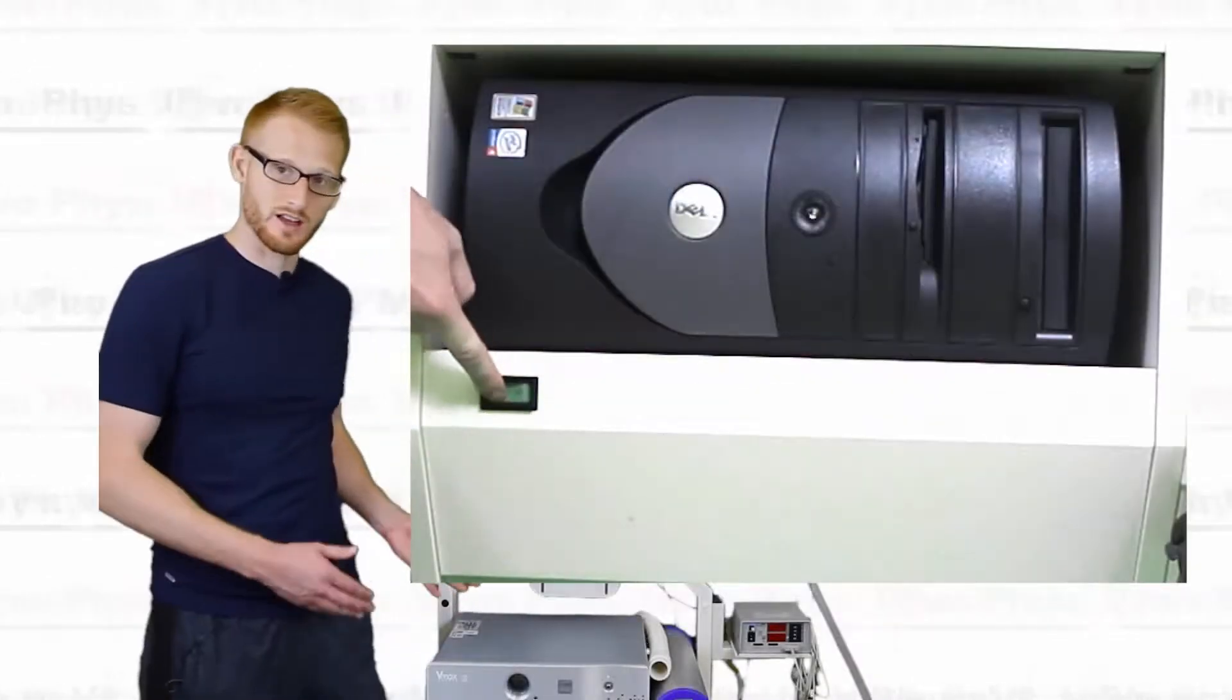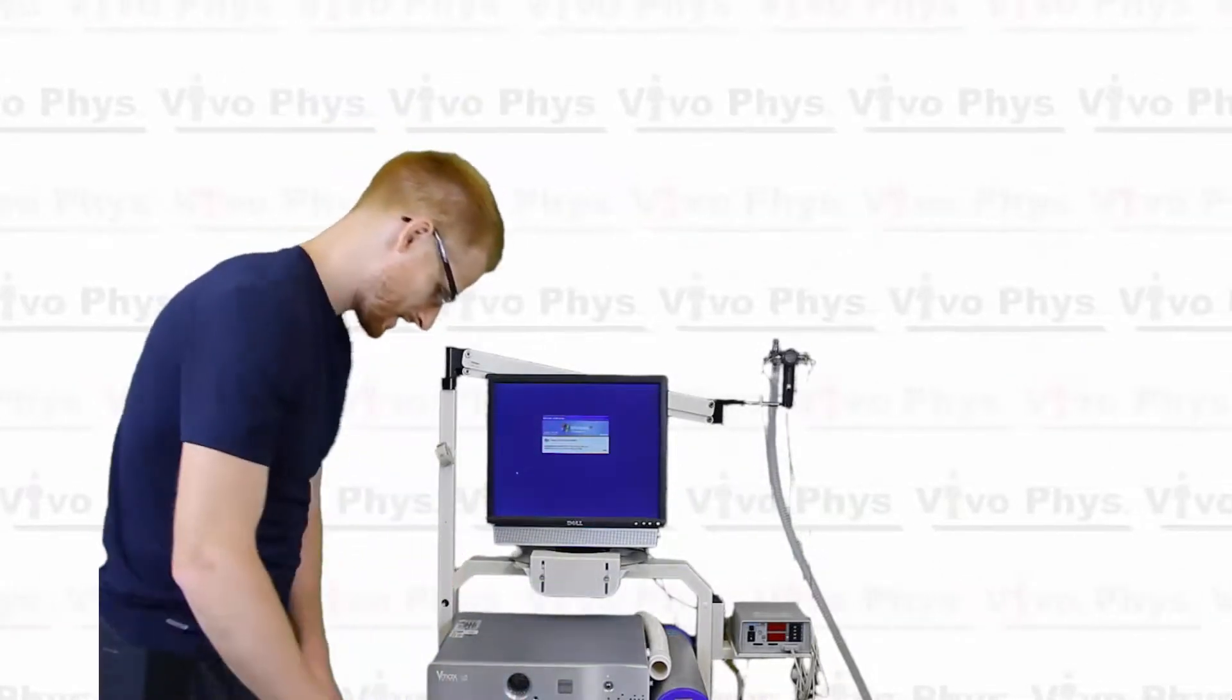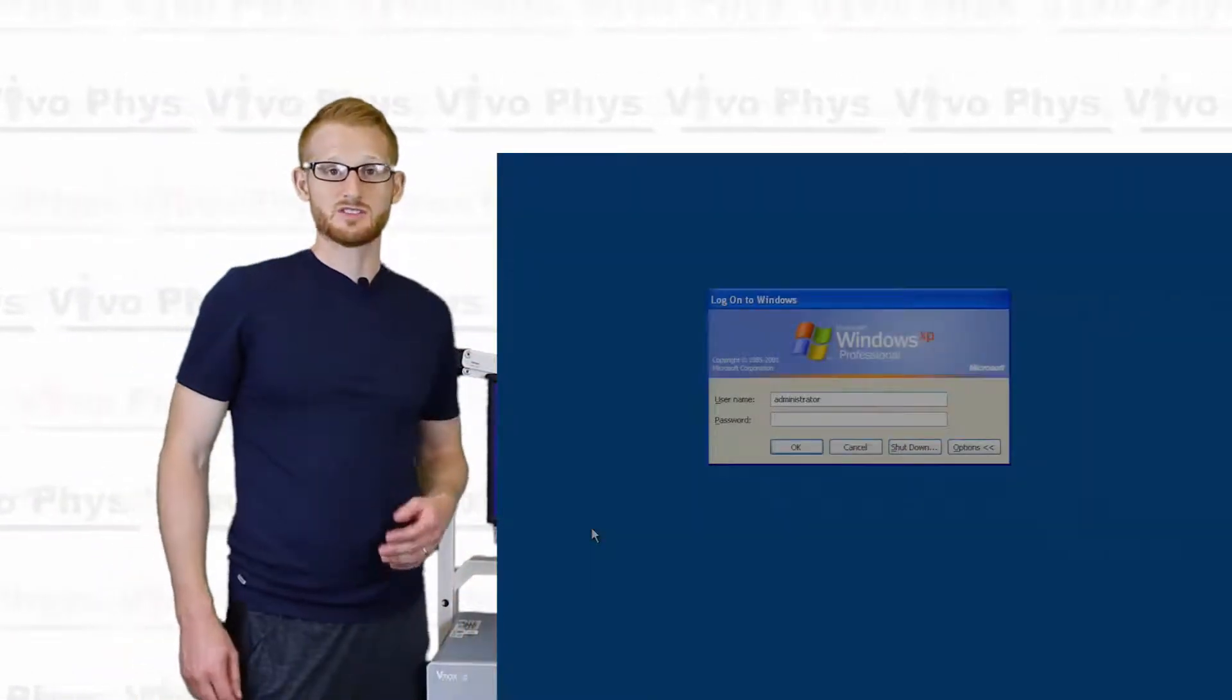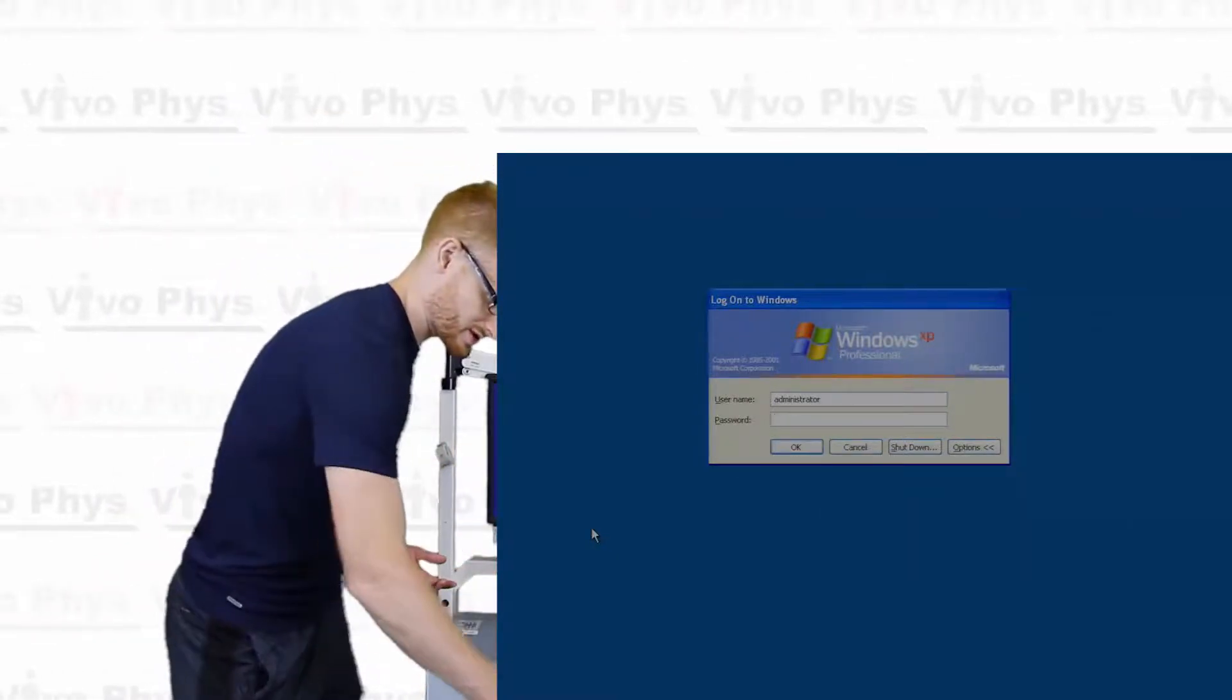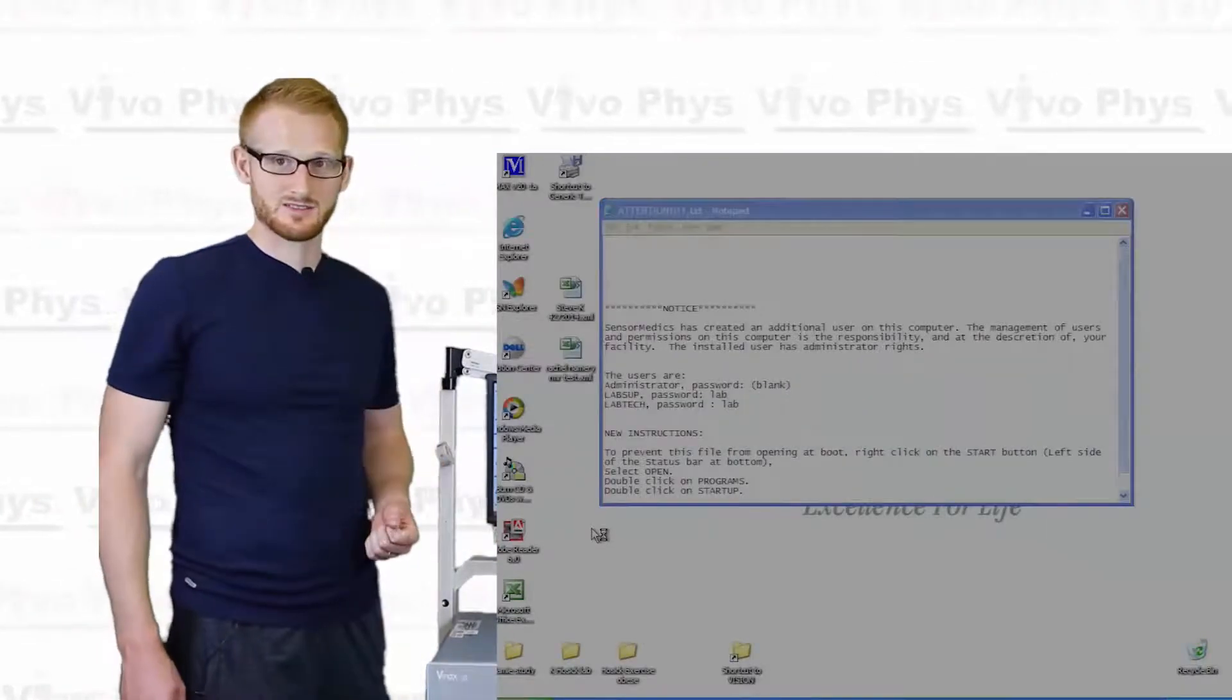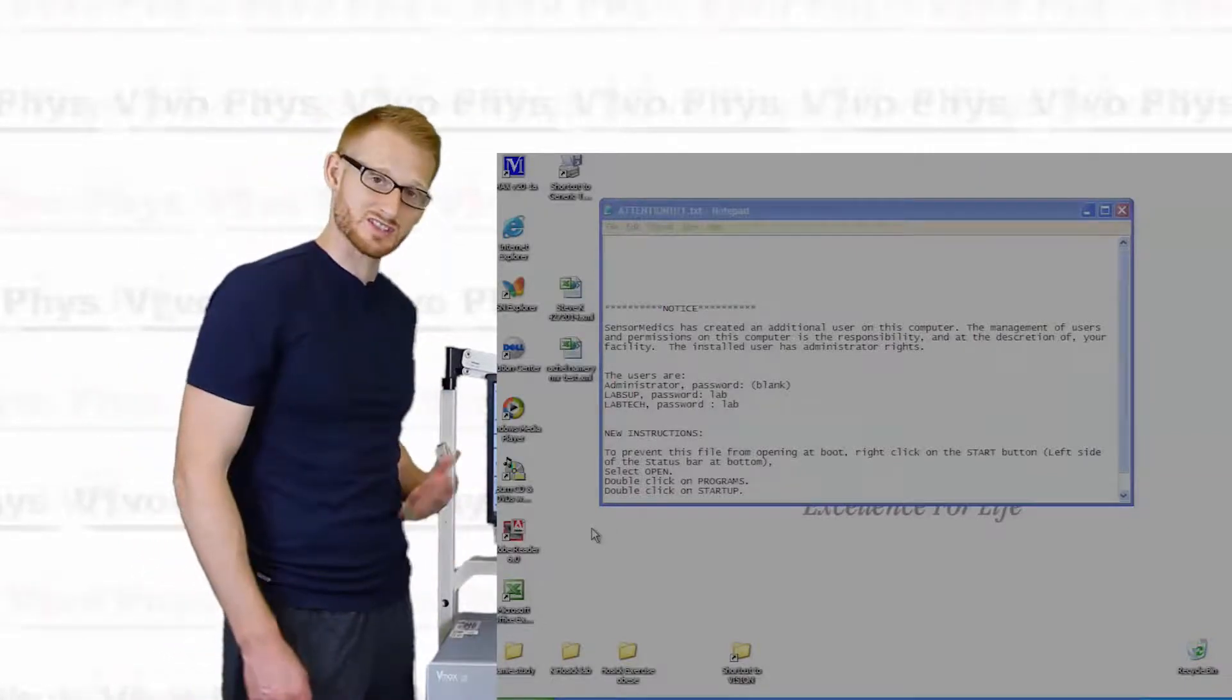So first off, I've already turned on the system, and now it's asking us to press Control-Alt-Delete in order to get to the administrator password. This particular system does not have an administrator password, so all you have to do is hit Enter. And from there, you're going to see the Viasis screen come up. There's always going to be this attention, this warning sign that comes up. You can just exit out of that.